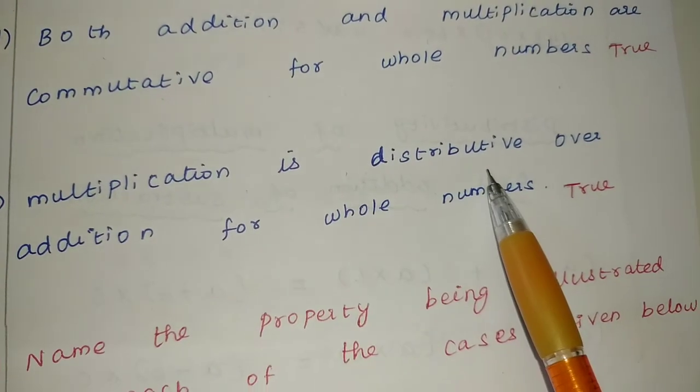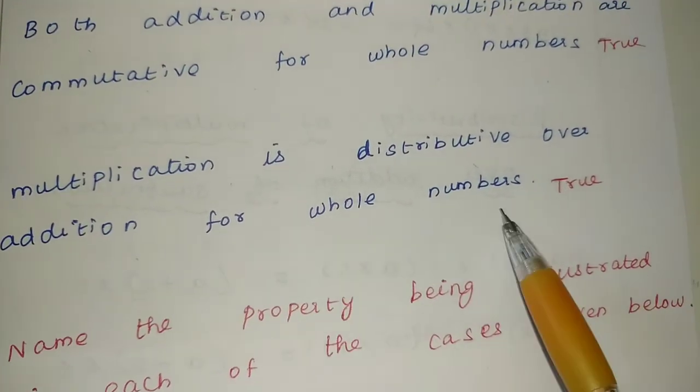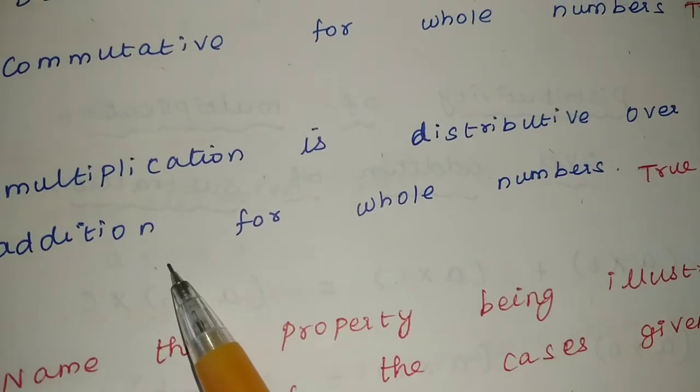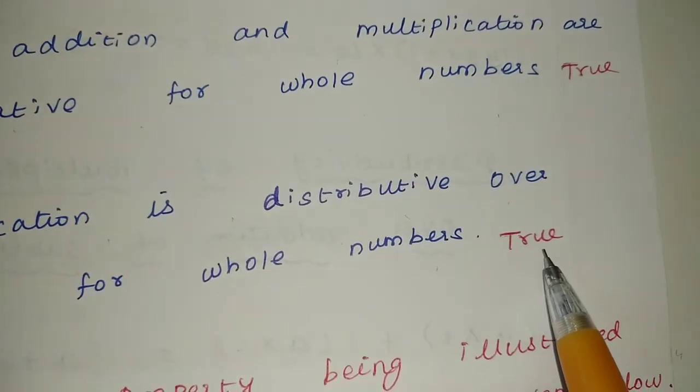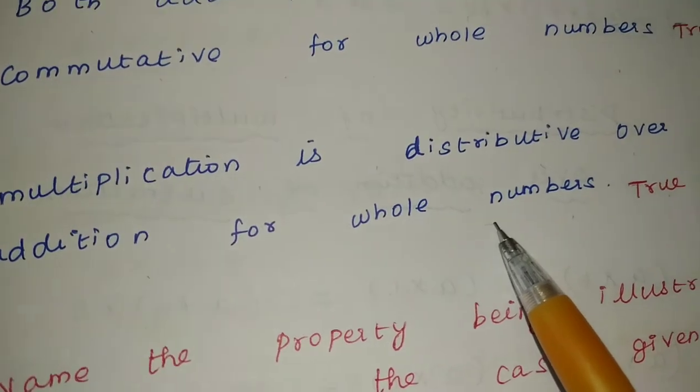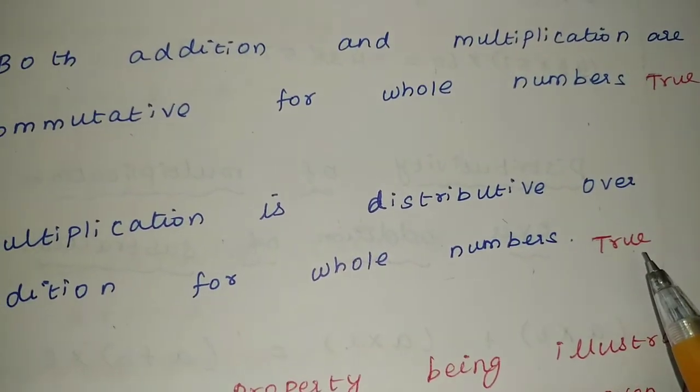Multiplication is distributive over addition for whole numbers. Correct. Distributive property is over addition, the multiplication. The statement is correct, so true.